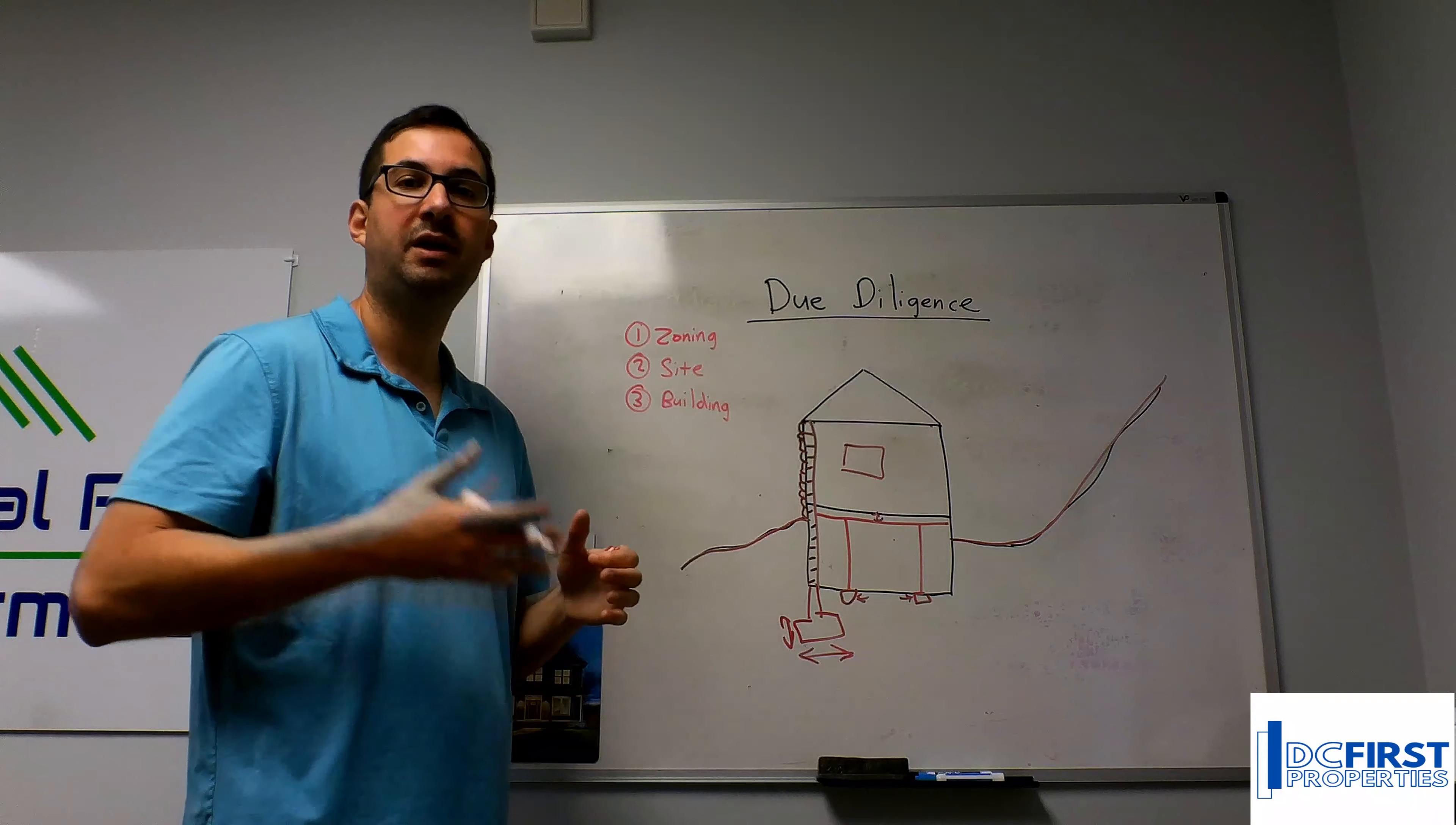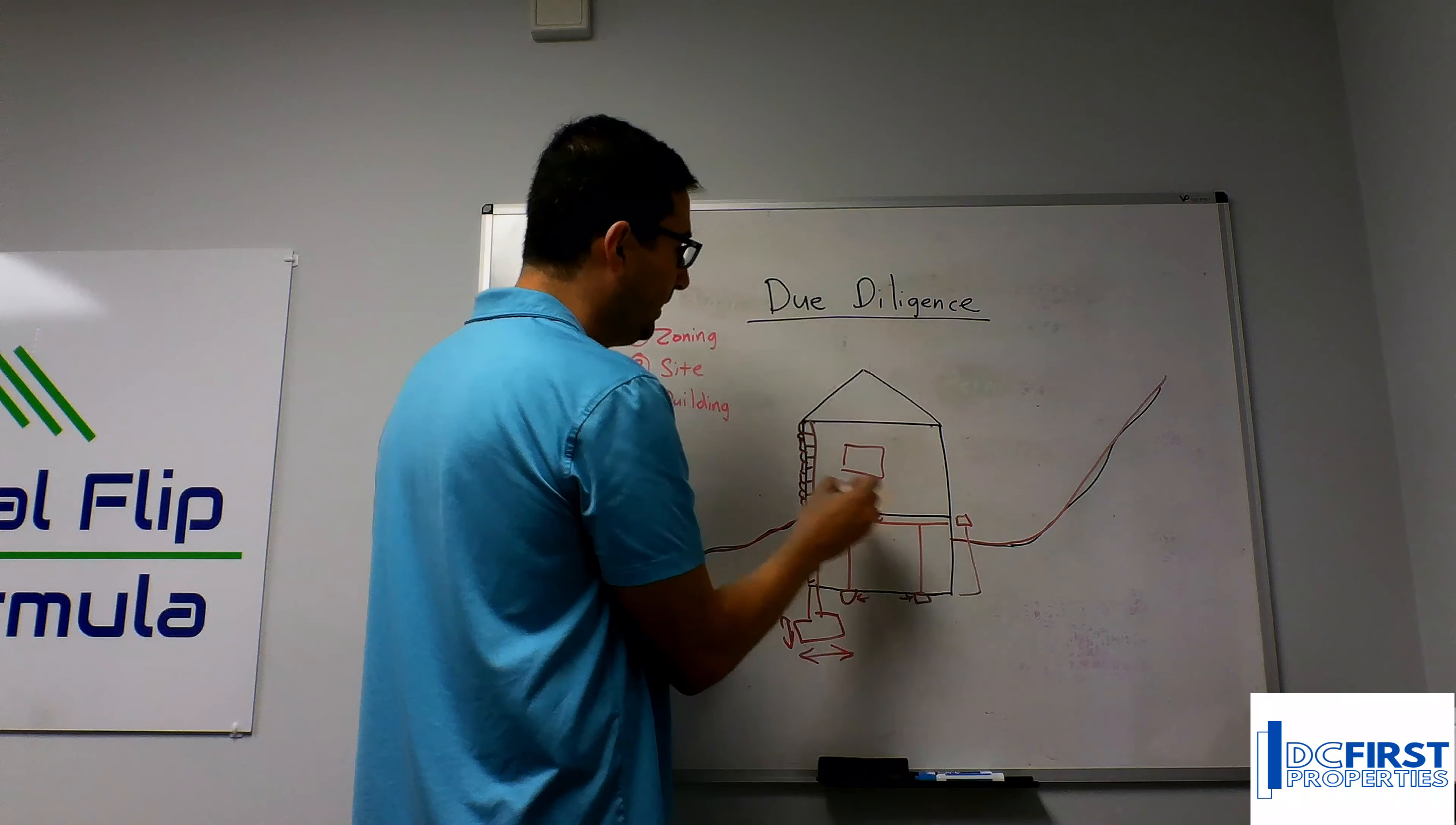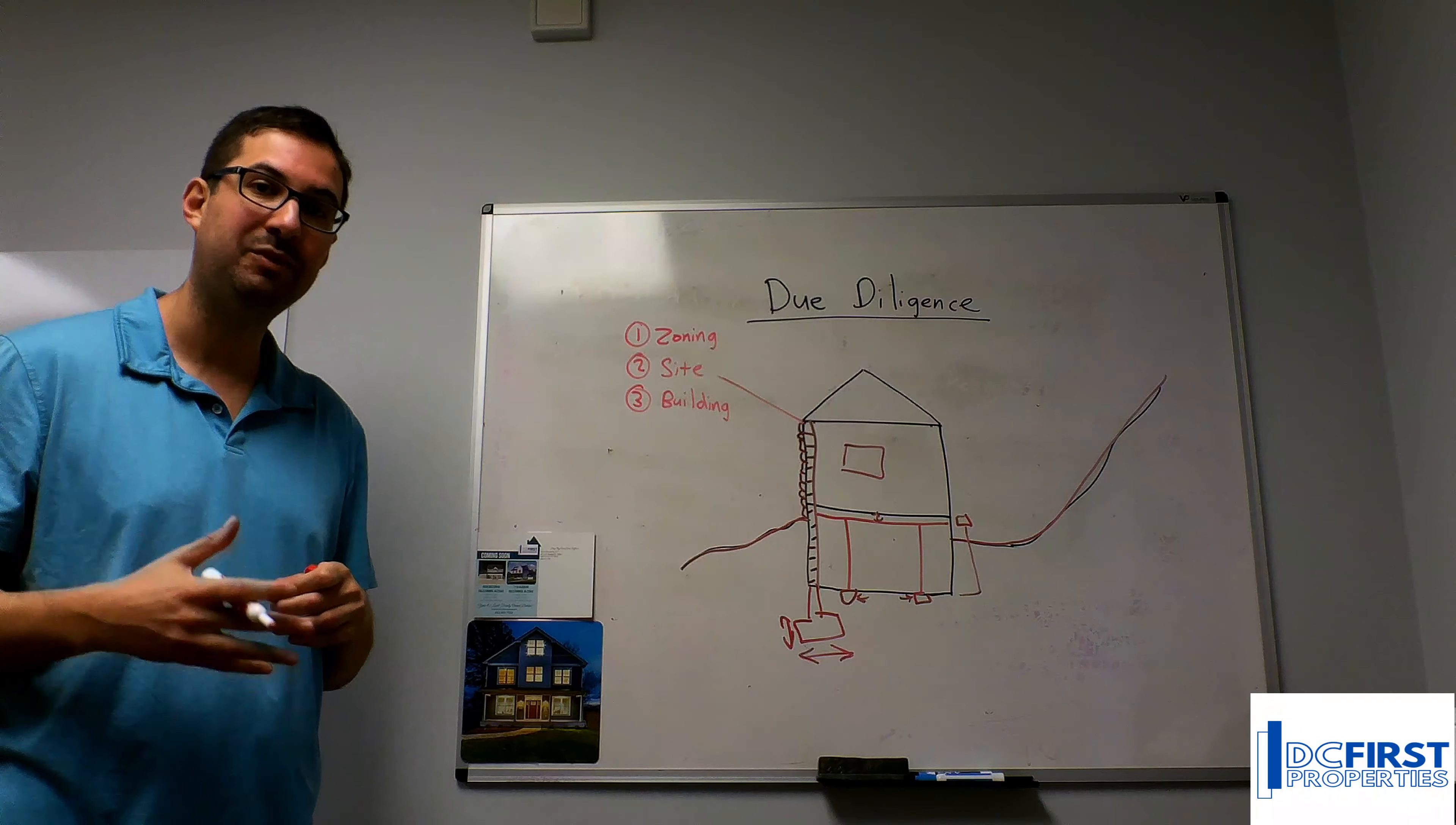The other thing I would highlight to you is you want to know where do the existing utility connections come in. Does the gas currently have a meter here and it's coming in through the ground that way? Is your electric overhead over here? You want to know where all these utility connections come in because moving these things around is going to cost you a lot more money.